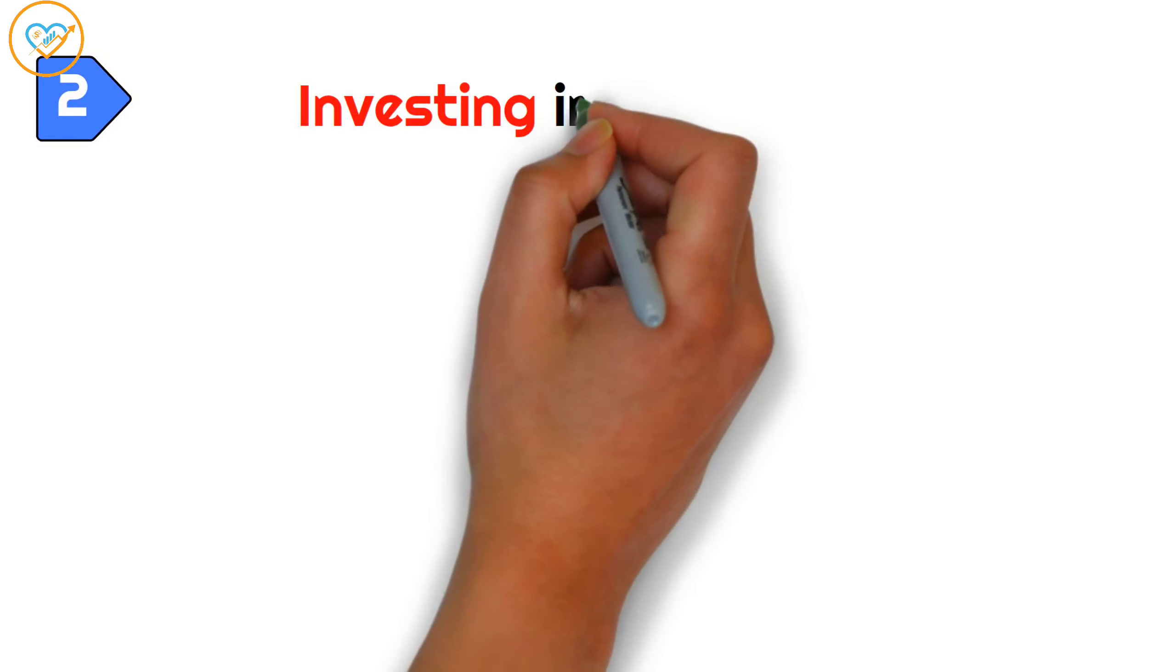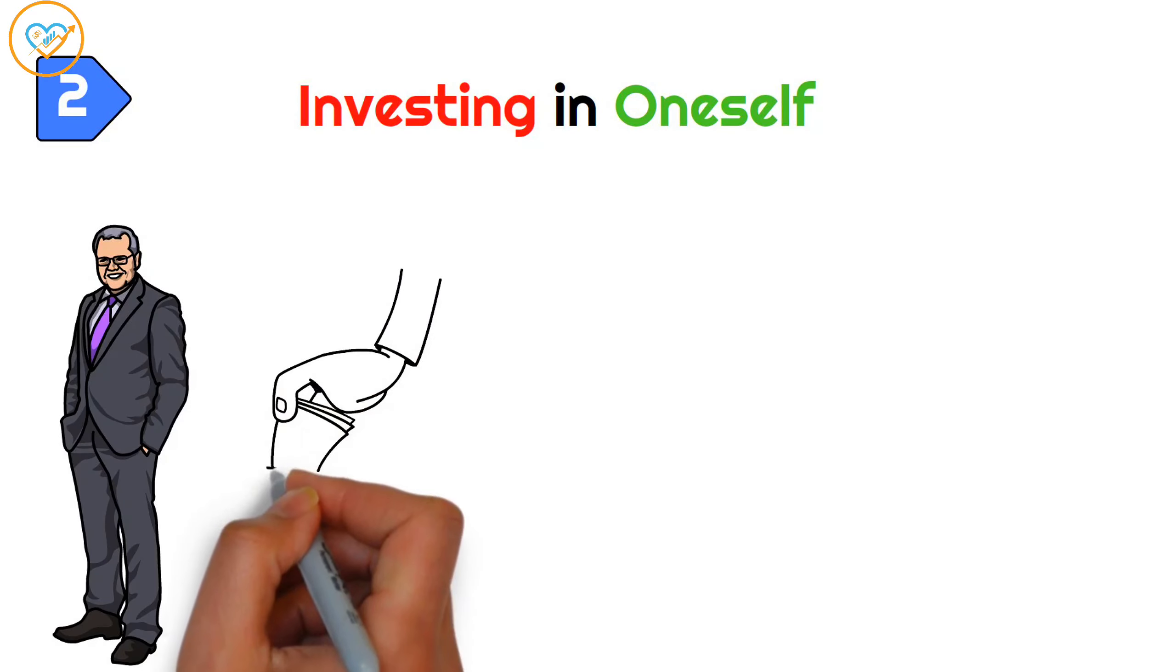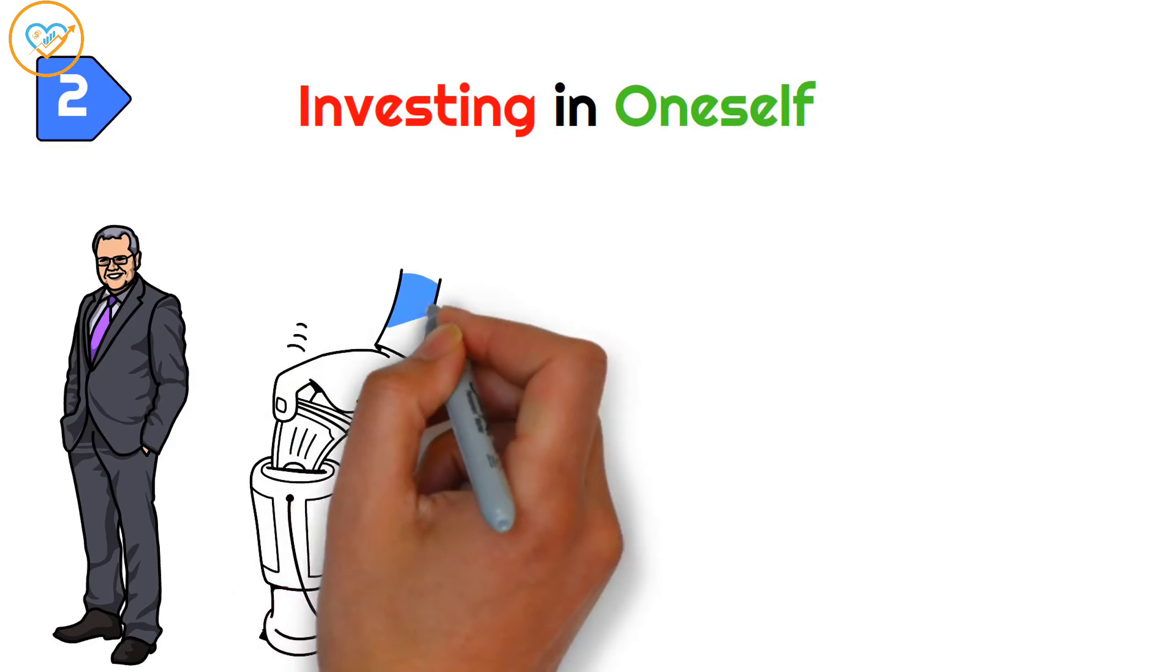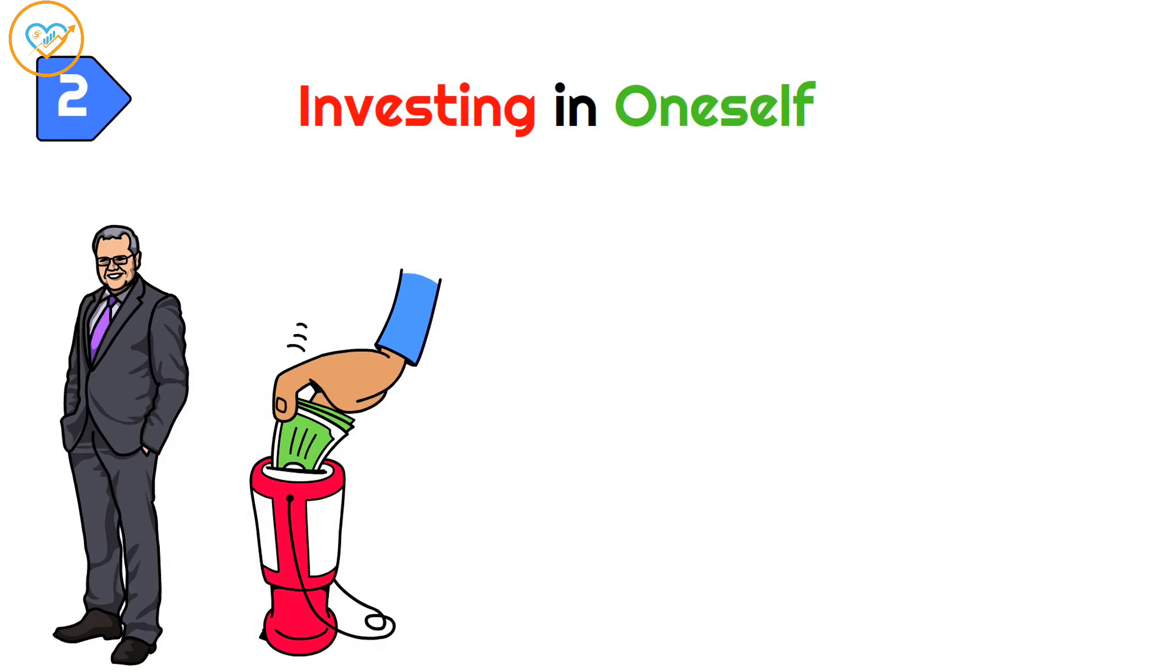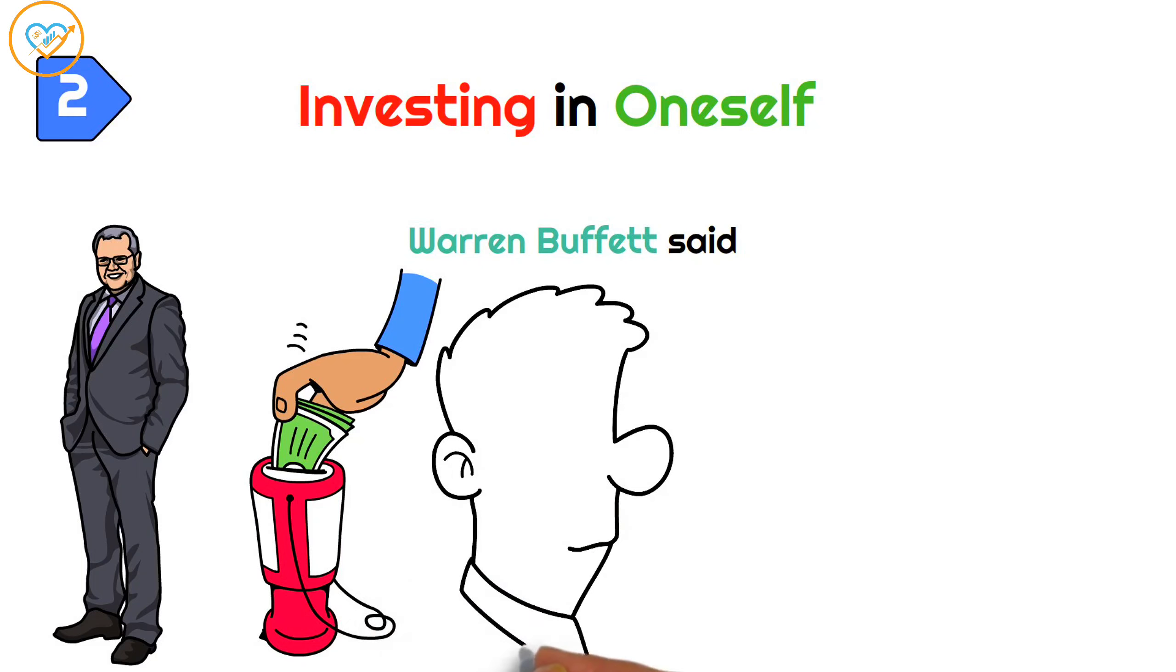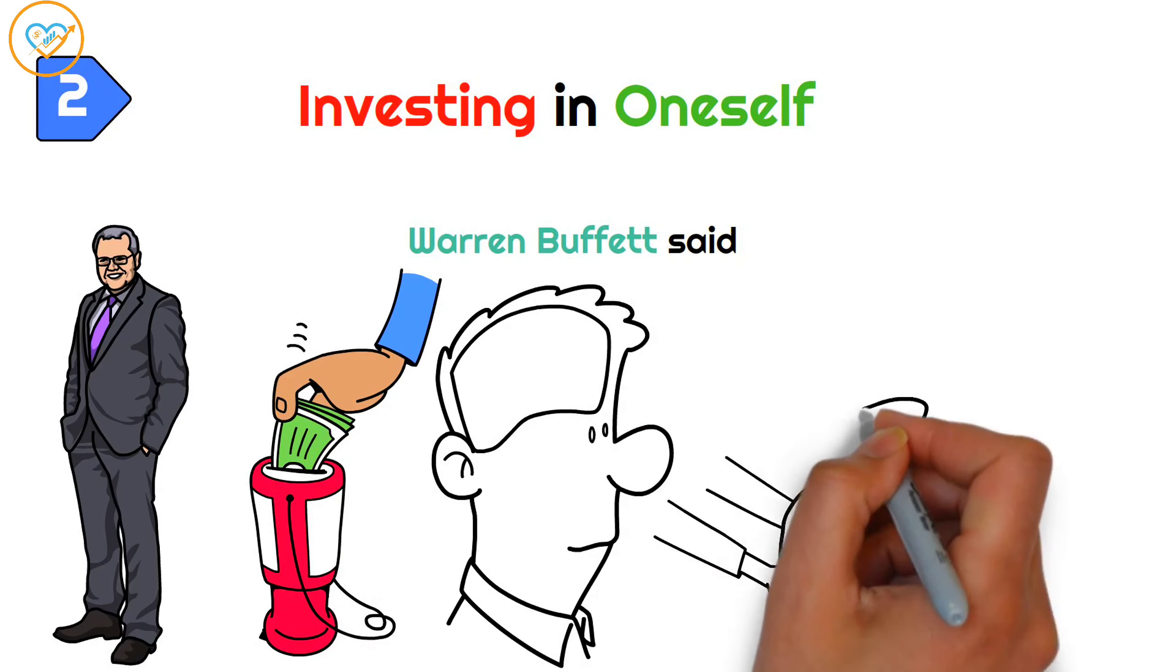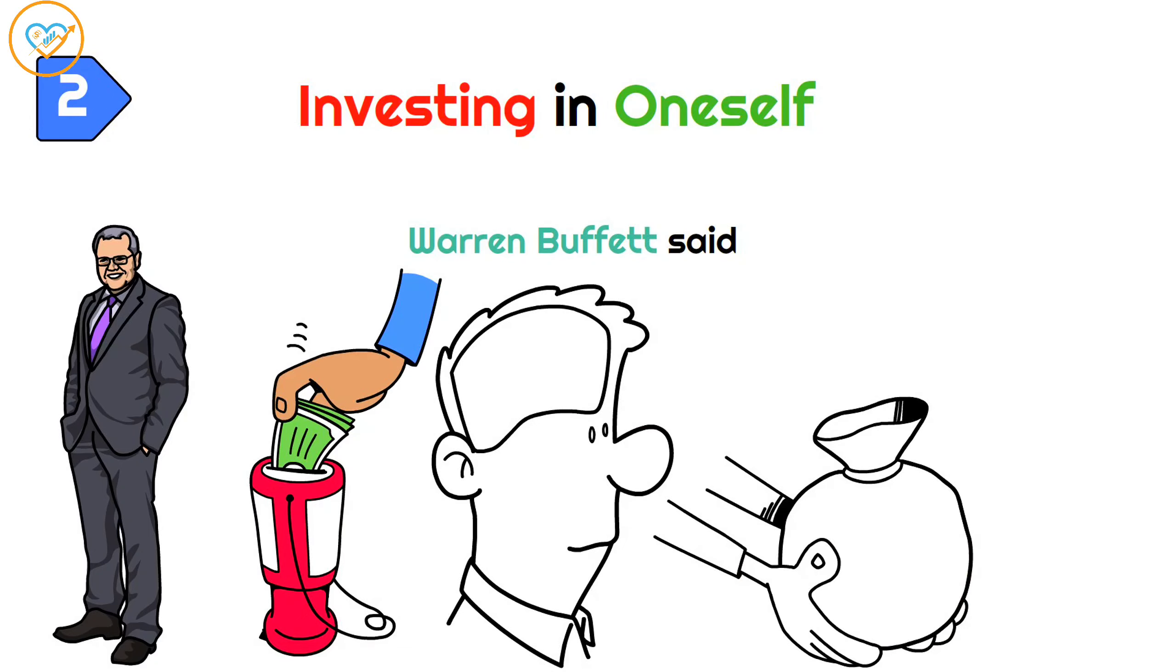Number 2. Investing in oneself. In the world of getting richer, one thing stands out as super important, which is simply put as investing in yourself. Like Warren Buffett said, most people go through life using up a very, very small part of their potential. And so, anything you do that invests in yourself is the best investment you can possibly make.